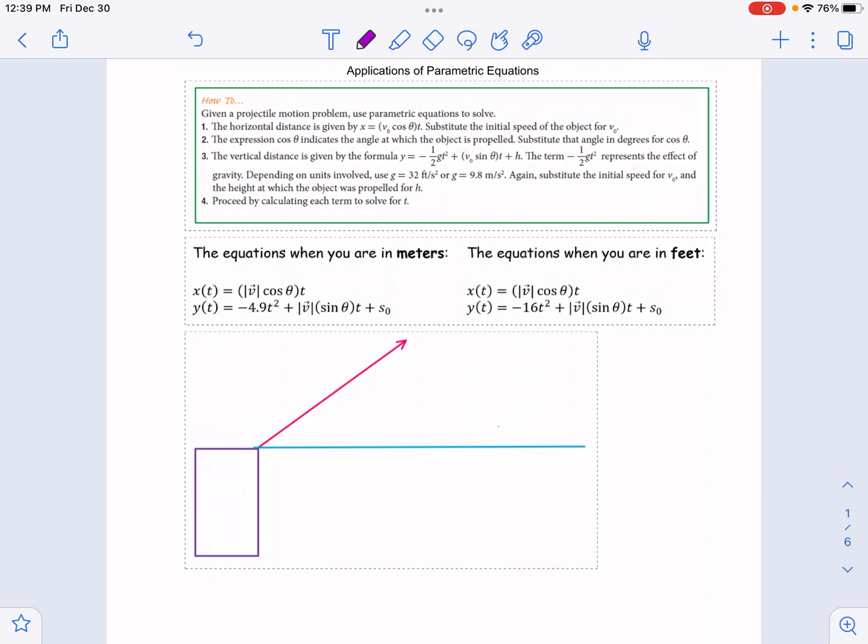Essentially all you need to know is the initial velocity, the direction, and the magnitude along with the initial height at which this object is launched. And then that determines everything. You can figure out the location of this object at any time.